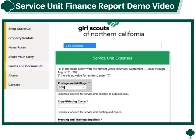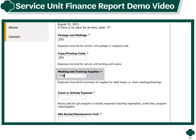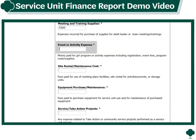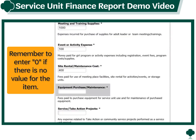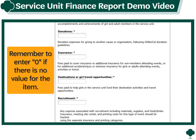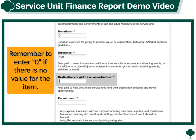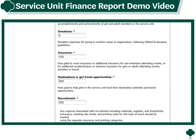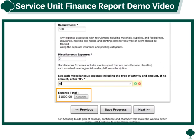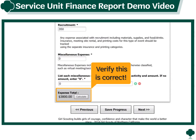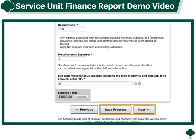Now enter the expense amounts for each expense category listed under service unit expenses. Remember to enter zero if there is no value for the item. After you enter all the expense amounts within each category listed, determine the expense total by clicking on the Calculate button.